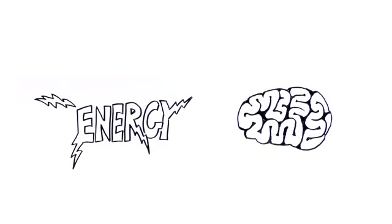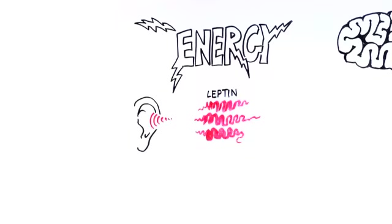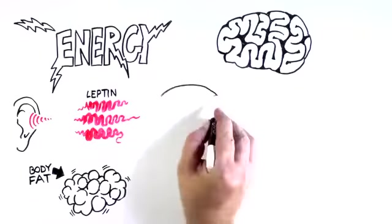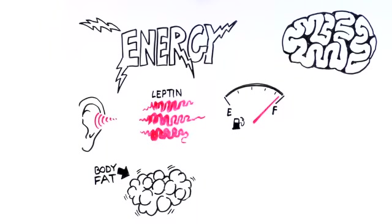For your brain to do this, it needs to know how much energy you have on board at all times. And it knows this by listening to hormones like leptin, which is made in your body fat. You can think of it like a car. Leptin is the gas gauge that tells your brain how much gas is in your tank.